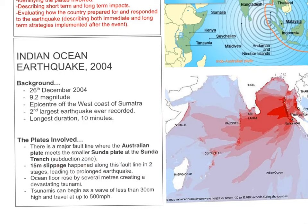That was the subduction zone. In your notes, 15m slippage happened along this fault line in two stages, leading to the prolonged earthquake. And for extra detail to add to your introduction, you could mention that the tsunami began as a wave of less than 30cm and can travel at up to 500mph.